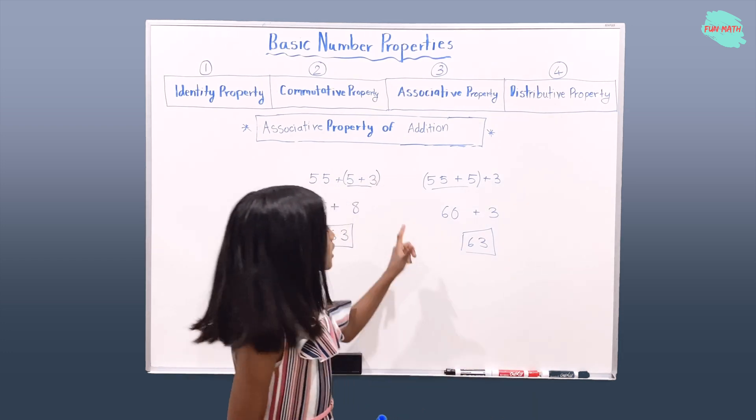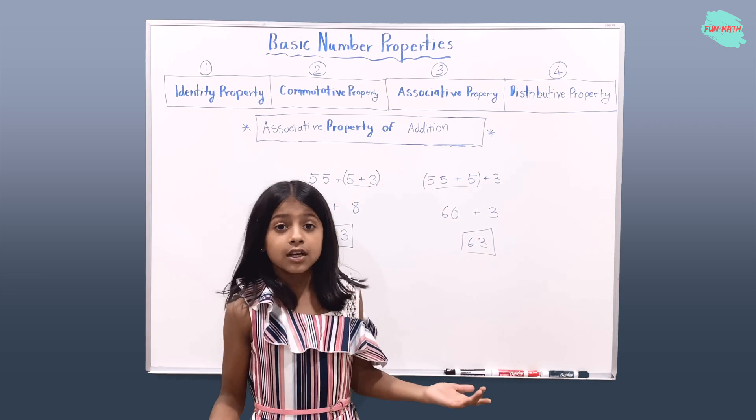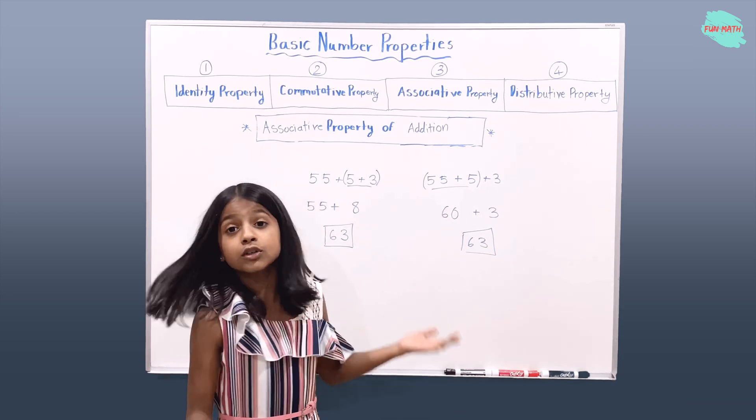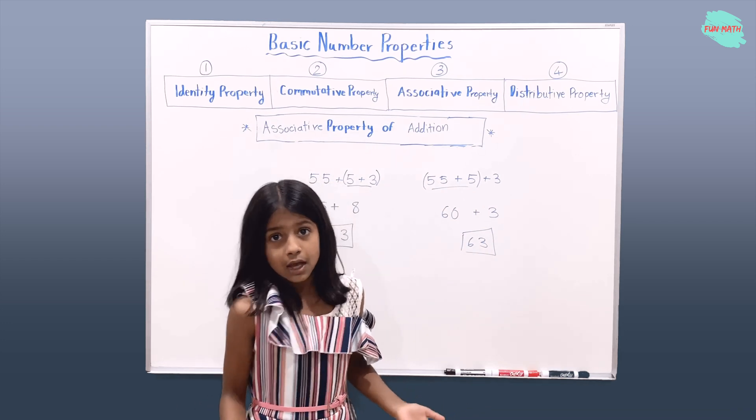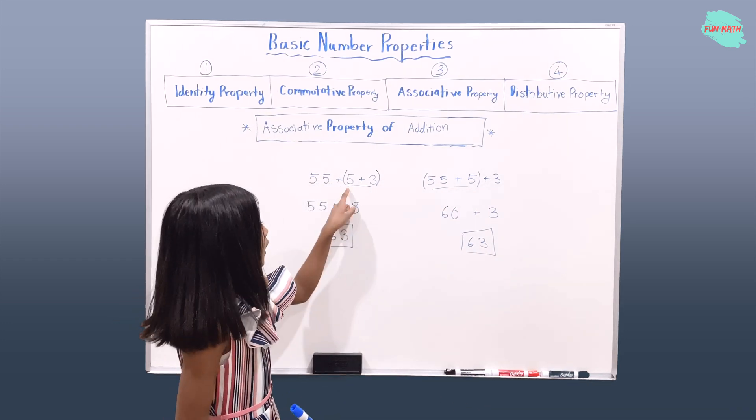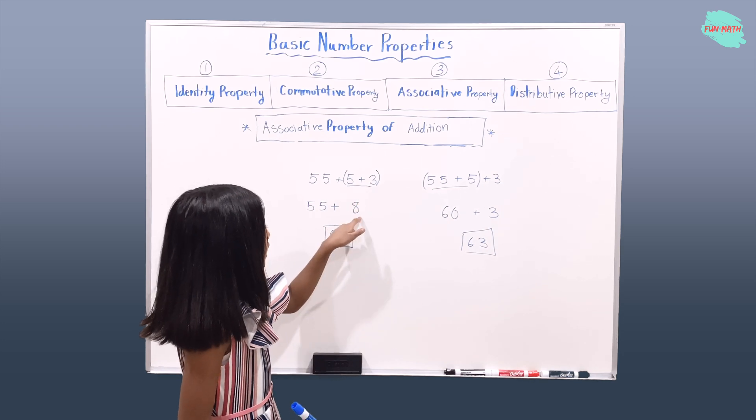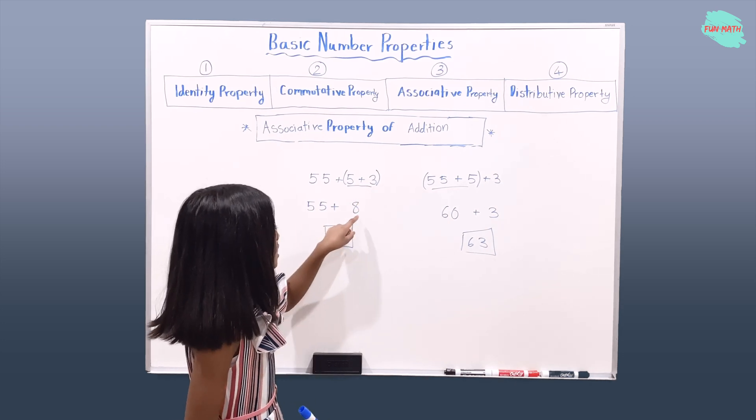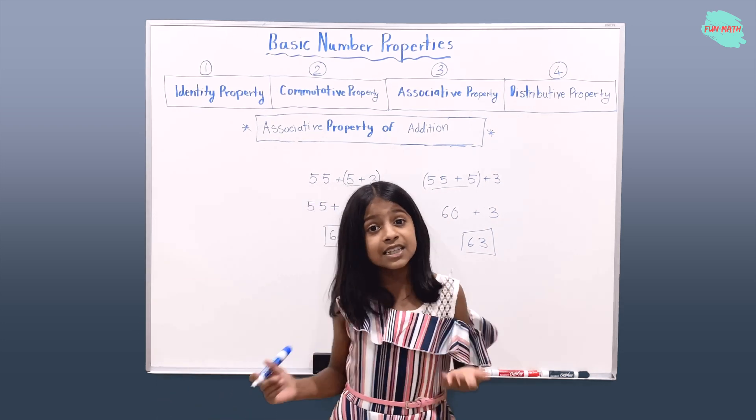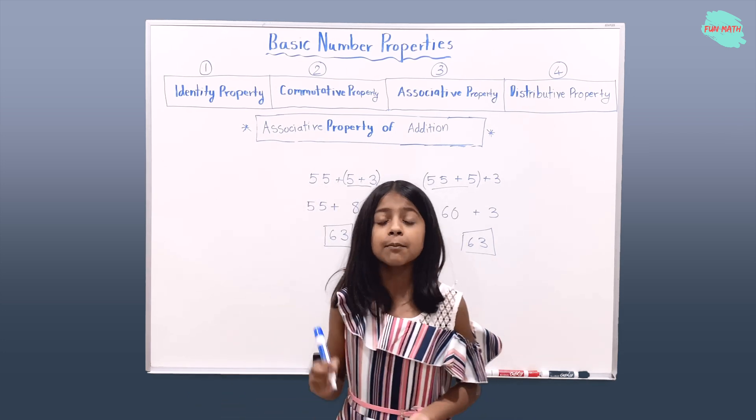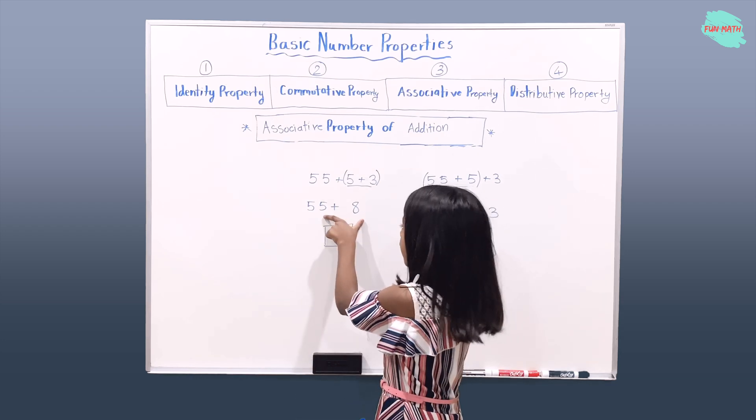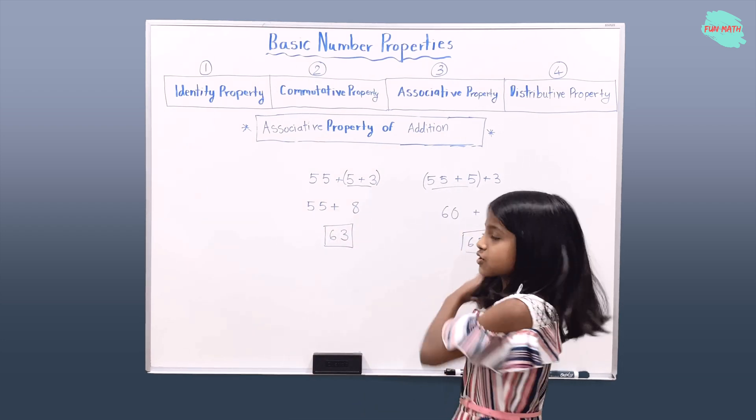You know that it's this one obviously because the two associatives are 55 and 5 which will give you 60. That's obvious. And here, 5 and 3 is 8. So 55 plus 8. It's easy if you use a calculator or not, but it might take a little bit more time for 55 plus 8 than 60 plus 3.